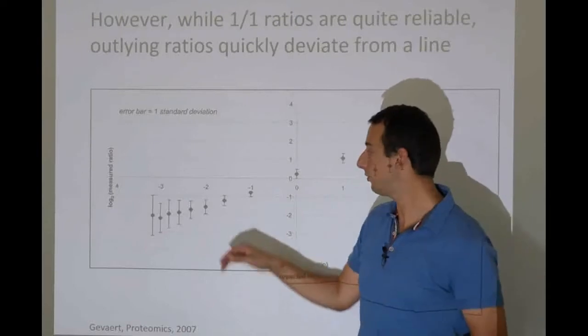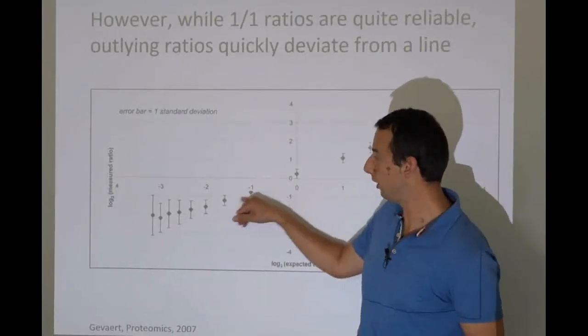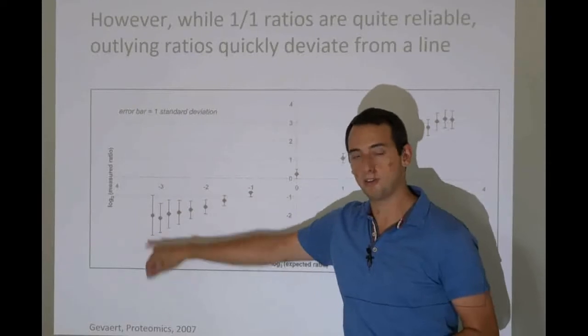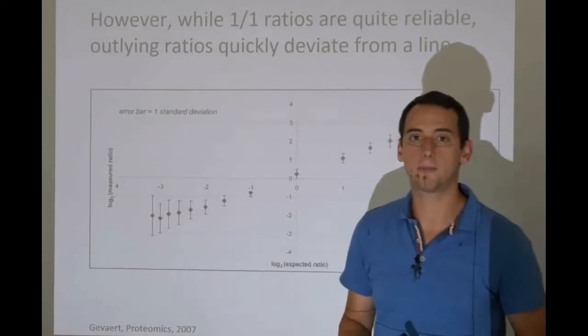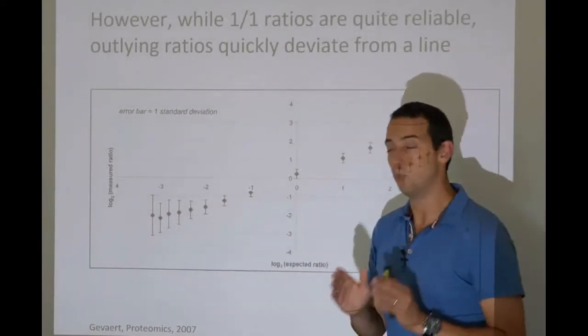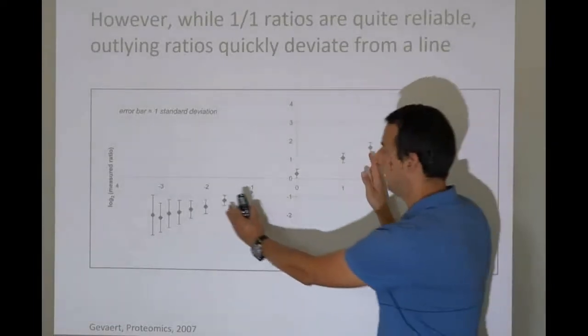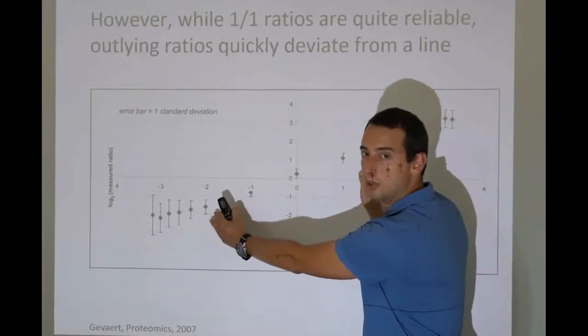we can also see that the error bars increase. So our measurements become less precise, and they also become less accurate. We no longer see two times more as two times more here,